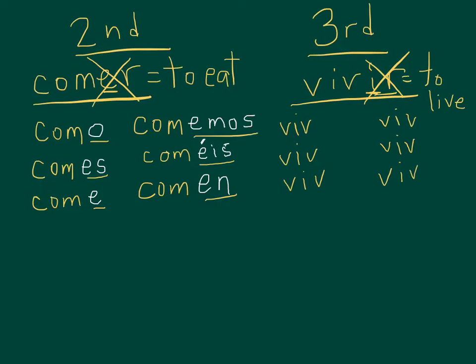Those endings, once again, for first person o, second person is an es again. So it looks a lot like the second conjugation so far, even in the third person. When we get to nosotros, that's the only place, besides vosotros,